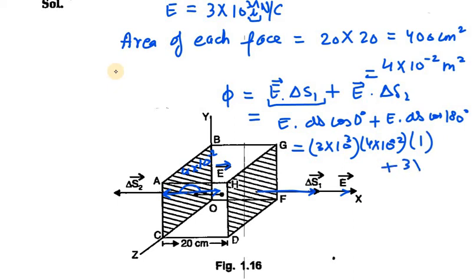The first term is 3×10³ × 4×10⁻² × cos 0° = 3×10³ × 4×10⁻² × 1. The second term is plus 3×10³ × 4×10⁻² × cos 180° = 3×10³ × 4×10⁻² × (-1). We have one positive term and one negative term, so therefore it will be zero.